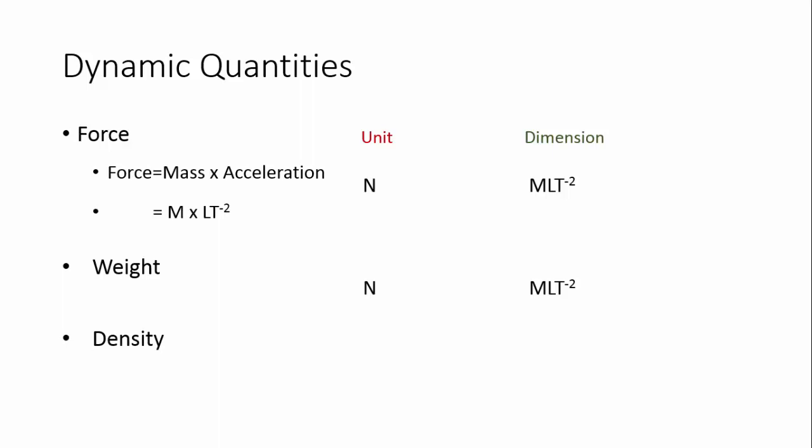Density: the formula for density is mass by volume, so kg per meter cubed is the unit of density, and it can be written as M·L to the power minus 3.